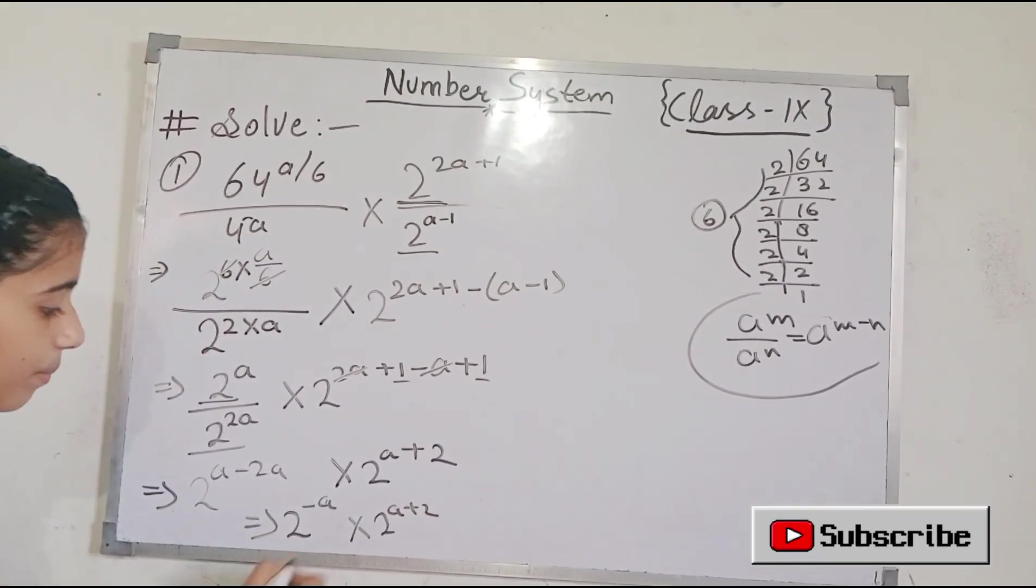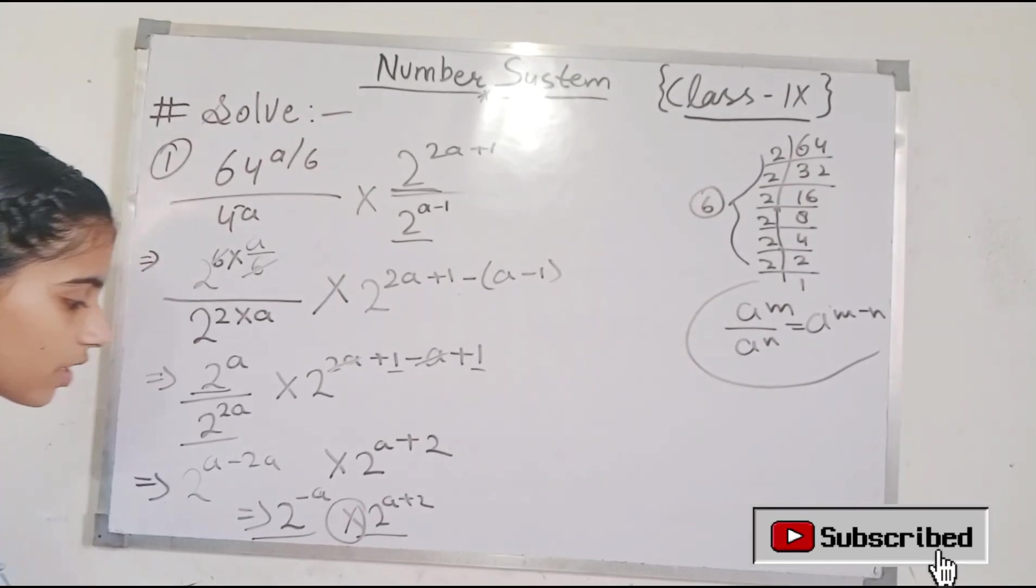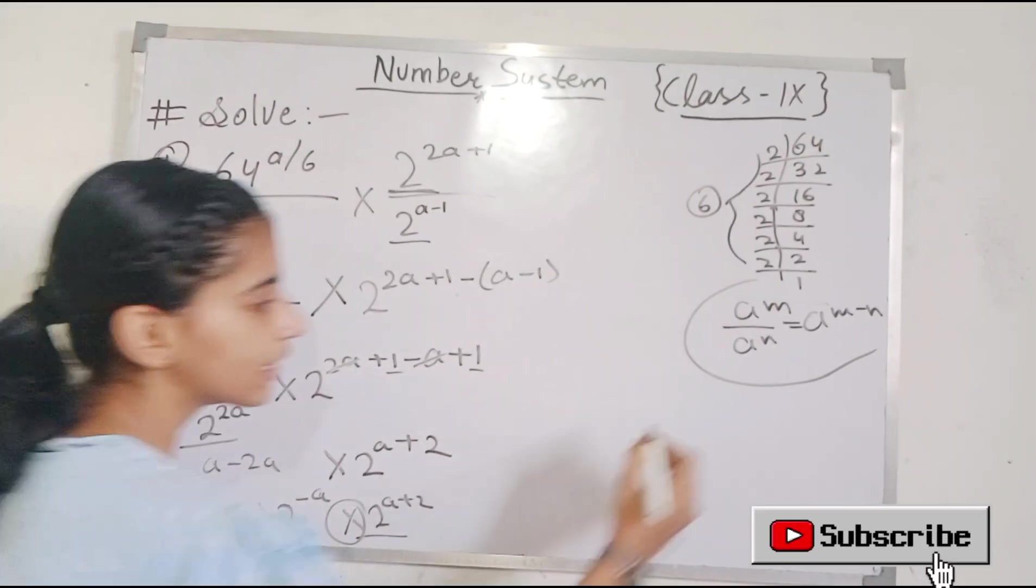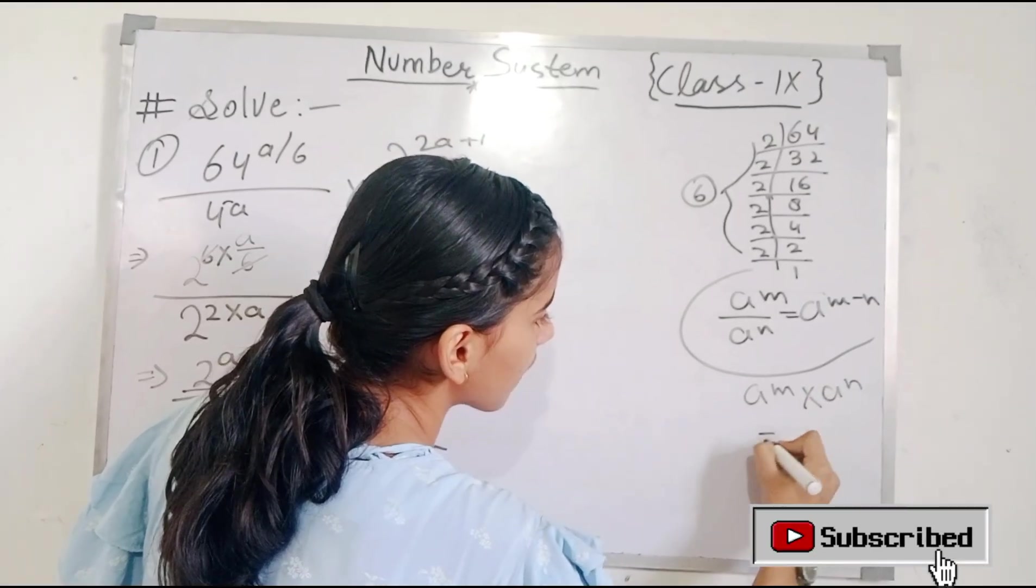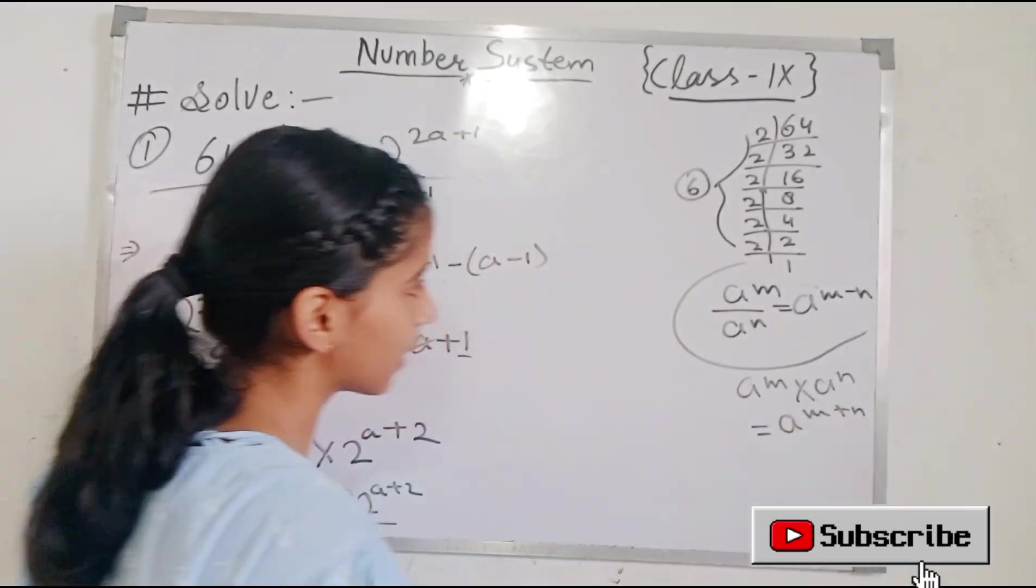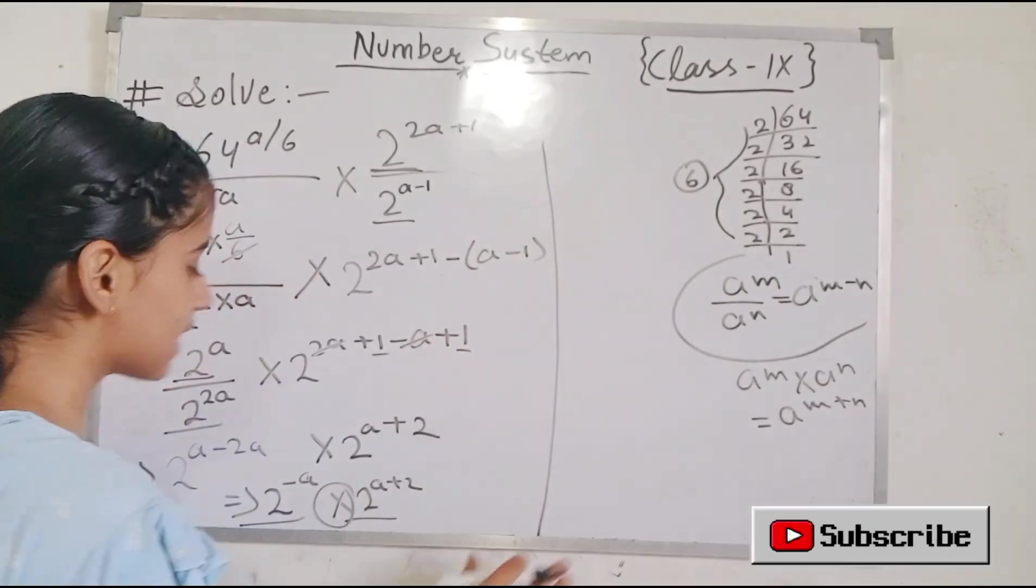Now what do we do? Base is the same but there is a sign of multiplication. So when there is a sign of multiplication and base is the same, then the powers are added instead of subtraction. So here we have to do the same thing.